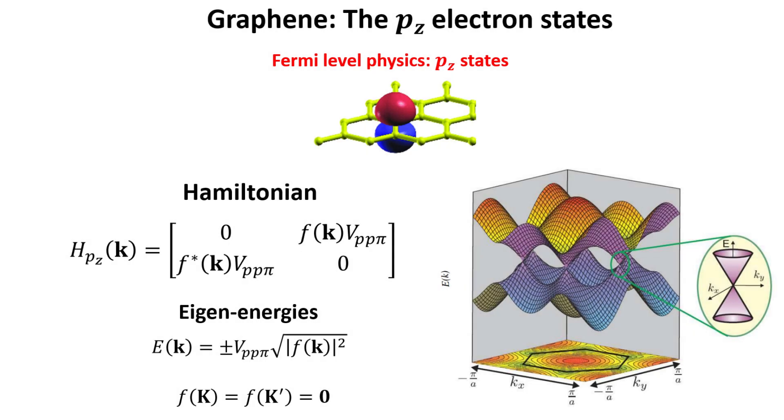The energy bands can be plotted as a function of kx and ky, the in-plane momenta. This is shown here. Note that there are six momentum points where the bands cross, corresponding to the corners of the hexagonal Brillouin zone as shown in the in-plane projection. These correspond to three K points and three K prime points.